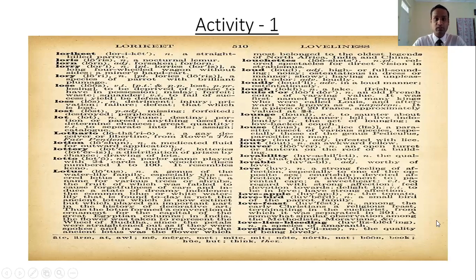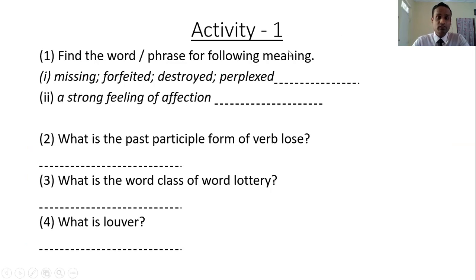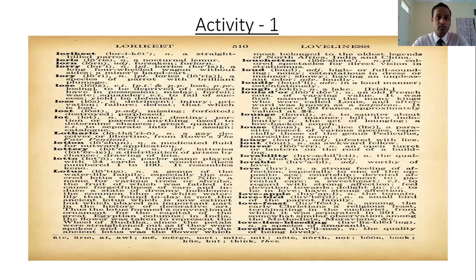Now for the activity: I have given you a dictionary page. The question is — find the word or phrase for the following meaning: 'missing, forfeited, destroyed, or perplexed'. The meaning is given and you need to find the word which has this meaning. Looking at the dictionary page: 'lost — missing, forfeited, destroyed, or perplexed'. So the answer is 'lost'.